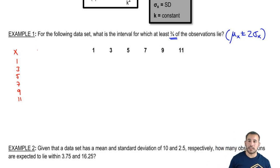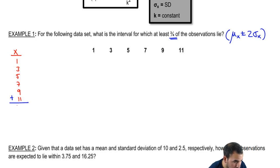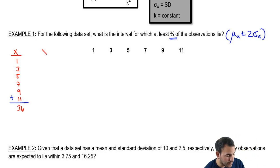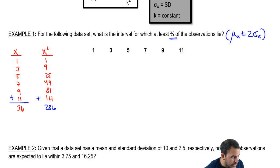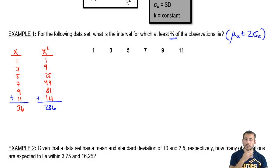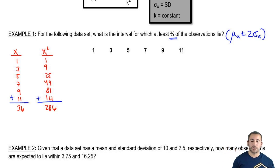To get the mean, all we do is add everything up. Once we add everything up, we get 36. Our next step is to square everything: 1 squared is 1, 3 squared is 9, 5 squared is 25, 7 squared is 49, 9 squared is 81, and 11 squared is 121. Once we square all that and add everything up, we get 286.